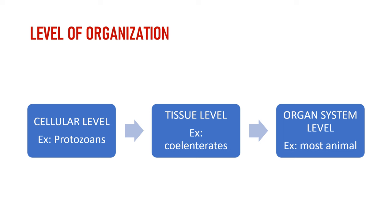The next level is tissue level, present in coelenterates like Hydra. Their body is multicellular and has two distinct layers or tissues of specialized cells. After the tissue level, there is organ system level, present in many animals whose body is also multicellular with many organs and organ systems.